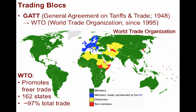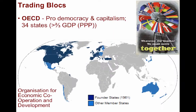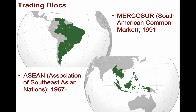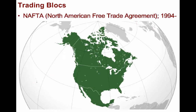Currently consisting of 162 member states, more than 97% of all global trade is conducted through this supranationalist organization. The Organization for Economic Cooperation and Development, or OECD, was born after World War II to coordinate the Marshall Plan and promote world trade through democracy and market economies. It has 34 member states producing more than two-thirds of the world's goods and services. Other supranationalist agreements also function as major facilitators of international trade, such as the European Union, Mercosur in South America, ASEAN in Southeast Asia, and NAFTA, the North American Free Trade Agreement.